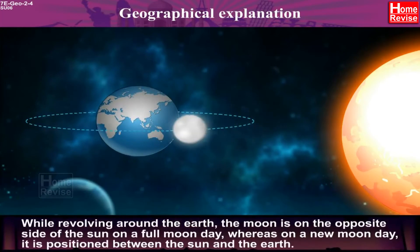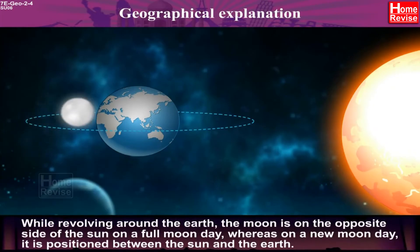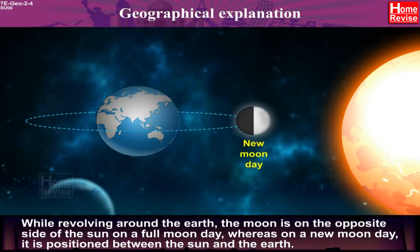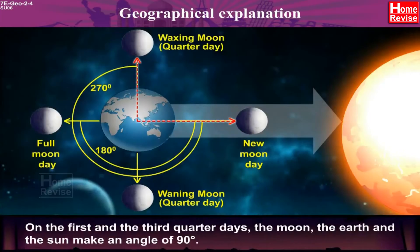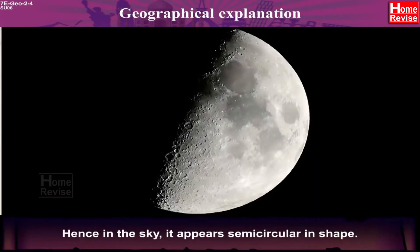While revolving around the Earth, the Moon is on the opposite side of the Sun on a Full Moon day, whereas on a New Moon day it is positioned between the Sun and the Earth. On the first and the third quarter days, the Moon, the Earth and the Sun make an angle of 90 degrees. At these positions, we see half the portion of the illuminated Moon. Hence, in the sky, it appears semicircular in shape.